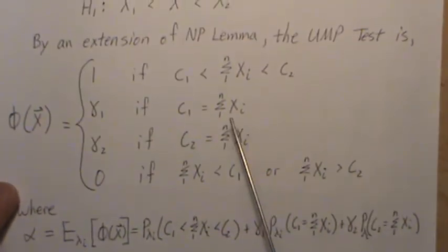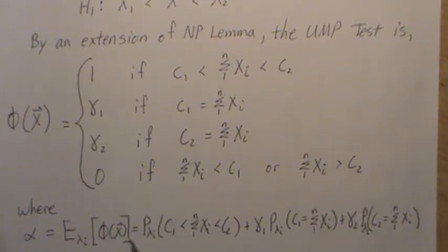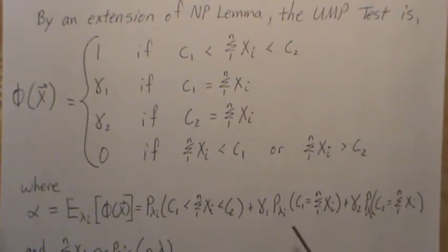In here to determine C1, C2, gamma 1 and gamma 2 there are two side conditions that have to be met. And that's actually part of the extension of the Neyman-Pearson lemma. Neyman-Pearson has one side condition: the expected value of the test function under the null hypothesis has to equal alpha. Here there's two.